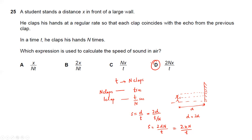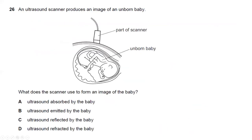Question twenty-six: an ultrasound scanner produces an image of an unborn baby. What does the scanner use to form the image? It uses ultrasound reflected by the baby — not absorbed, not emitted, not refracted. Answer C is the right answer.